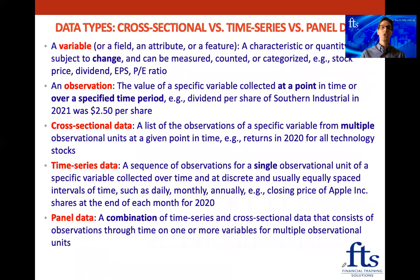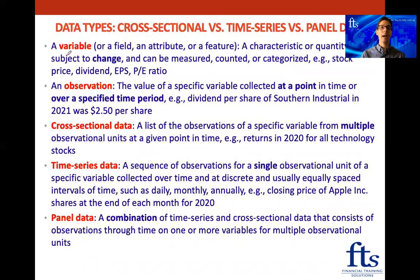The next comparison we're going to do is cross-sectional versus time series versus panel data. A variable — also called a field, attribute, or feature — is a characteristic or quantity that is subject to change, and it can be measured, counted, or categorized. For example, a share price changes all the time, dividends change depending on the company's profits, and earnings per share change depending on what the profits are.